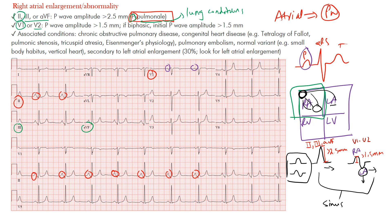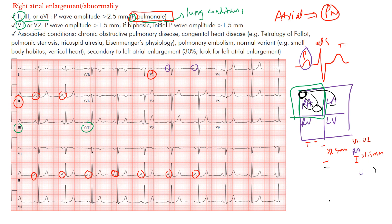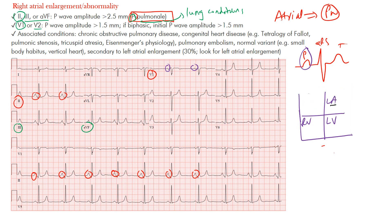Some associated conditions include chronic obstructive pulmonary disease, or COPD. This is a lung condition often seen in smokers. If we redraw the heart: blood flows from the right atrium to the right ventricle, and from the right ventricle it goes out to the lungs.